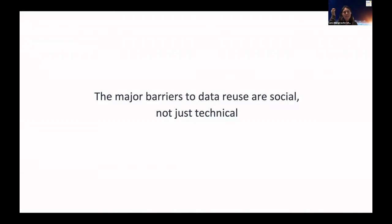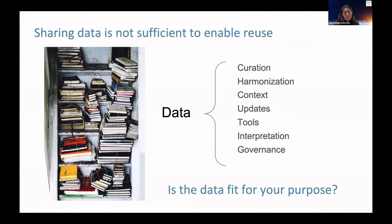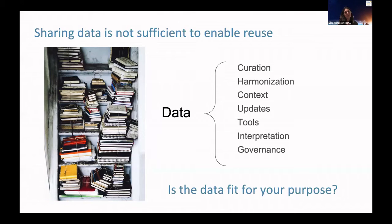We've talked a lot in previous sessions about what we need from data to effectively reuse it. We know that sharing data is not sufficient — the data needs to be FAIR, well described, and well annotated. But even with advances in standardized, automated, and machine-learnable approaches, when a data consumer encounters a dataset in a repository, they still have to ask: is this data of sufficiently high quality for the analysis I want to do?